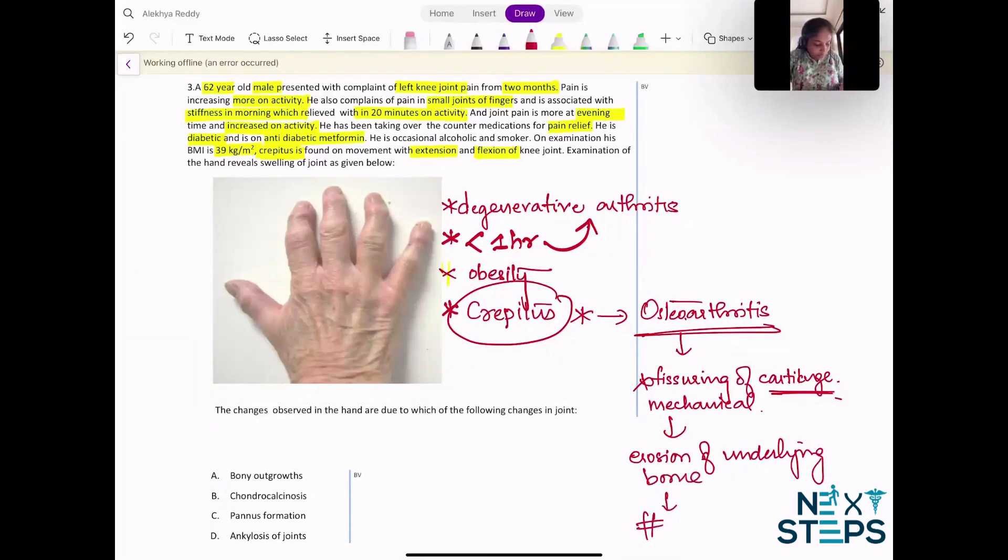Examination of the hand reveals swellings of the joints. What are these characteristically? The proximal interphalangeal and the distal interphalangeal - Bouchard's and Heberden's nodes.